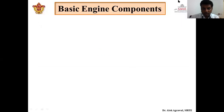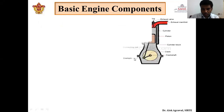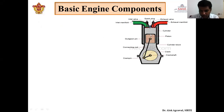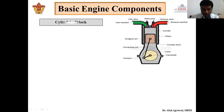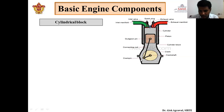So first of all we start with basic engine components. This is the basic figure of our IC engine. The first component is the cylinder block. This lower portion is our cylinder block, in which the crankshaft rotates. This circle is showing the path of the other end of the crankshaft. This cylindrical block is a very important component because it carries the complete load of our engine and has to be very strong.